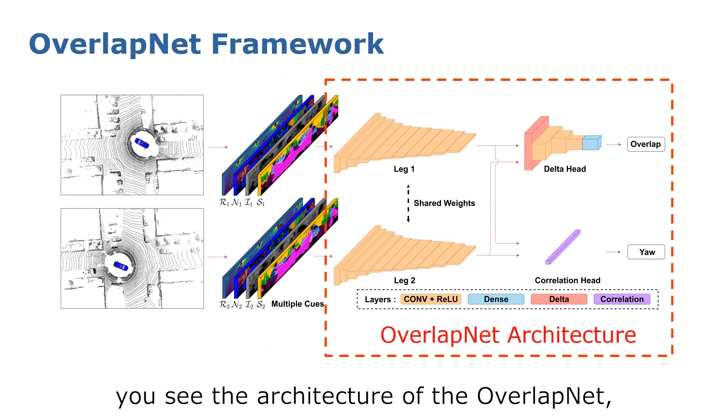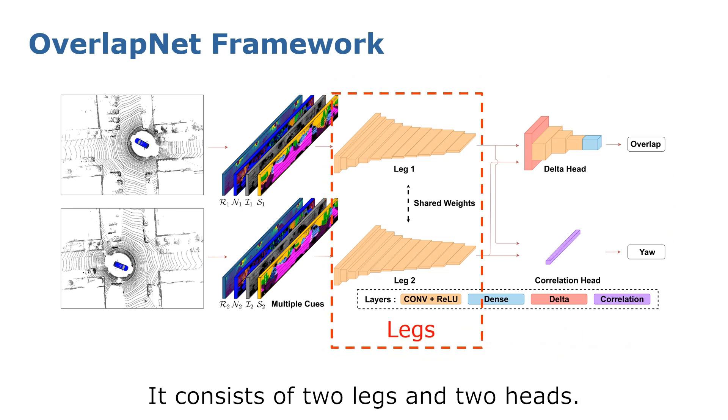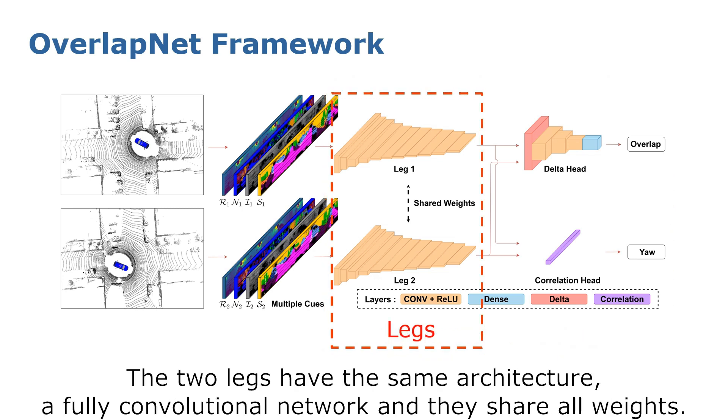On the right-hand side, you see the architecture of OverlapNet, which is a modified Siamese network. It consists of two legs and two heads. The two legs have the same architecture, a fully convolutional network, and they share all weights.